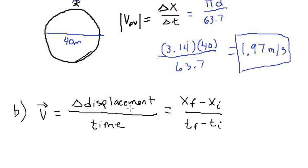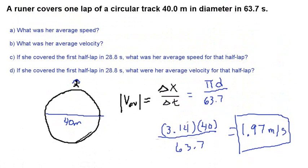Now we're going to do part 2 of the video. We're going to answer problem B. A runner covers one lap of a circular track 40 meters in diameter in 63.7 seconds. What was her average velocity? So now we're not looking for average speed, now we're looking for average velocity.